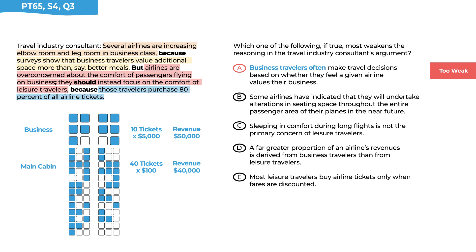Answer choice B says some airlines have indicated they will undertake alterations in seating space throughout the entire passenger area in the near future. The problem is we don't know the direction of those alterations — they could reduce quality for leisure travelers and increase it for business travelers, or the reverse. Without knowing that, we can't use this to undermine the conclusion because the changes could be exactly in line with it. This one is too weak — eliminate answer choice B.